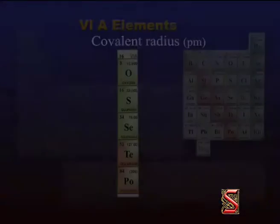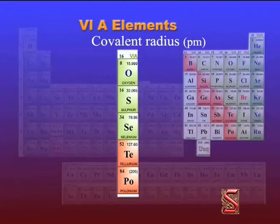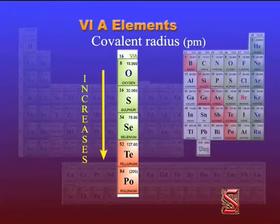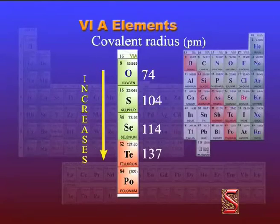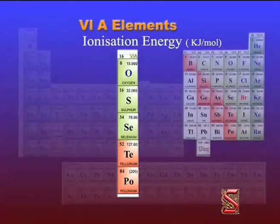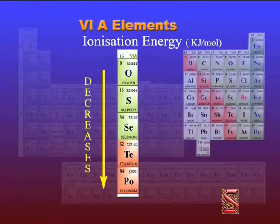The covalent radius increases from oxygen to tellurium. The ionization energy gradually decreases from oxygen to polonium.